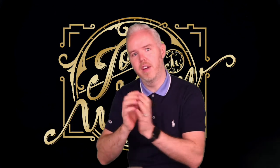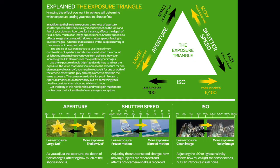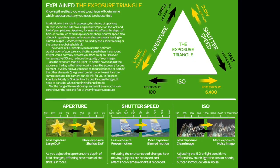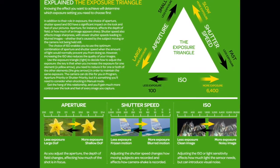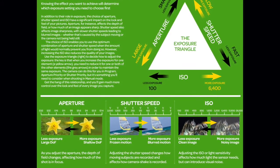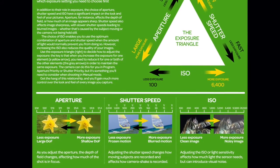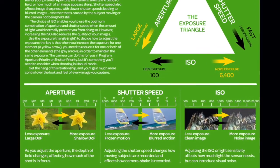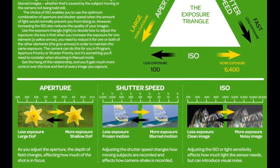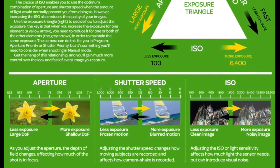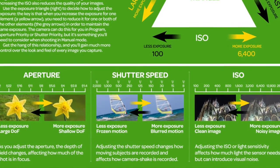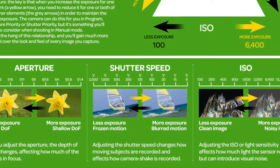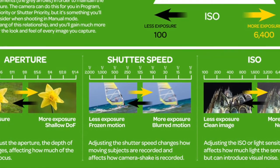Then we've got shutter speed. A slow shutter speed allows more light into the sensor of the camera, which is going to make your picture brighter. However, it's also going to cause your image to be more blurry if you get camera shake or movement, while also letting more ambient light into the image. The lower the shutter speed number, the blurrier the image can be if there's movement, but the brighter your picture will be.